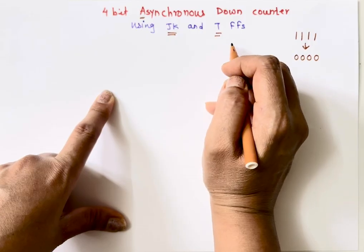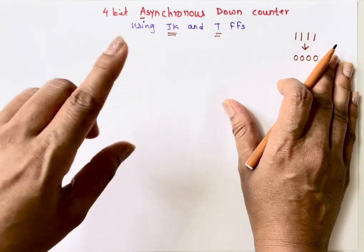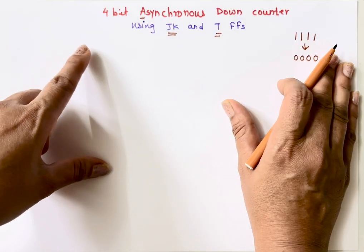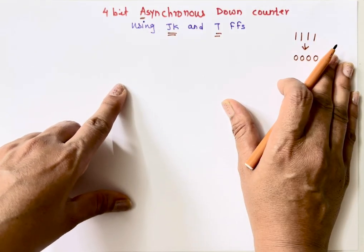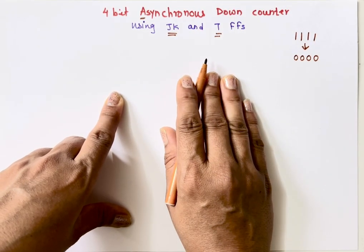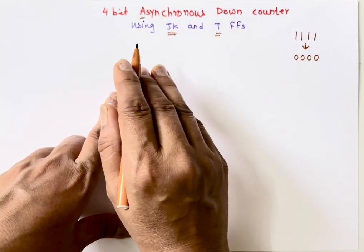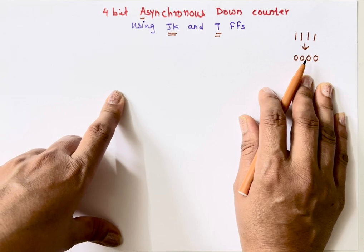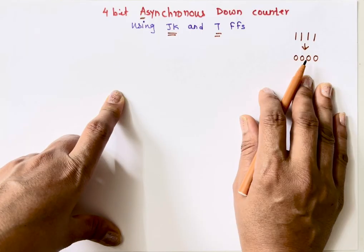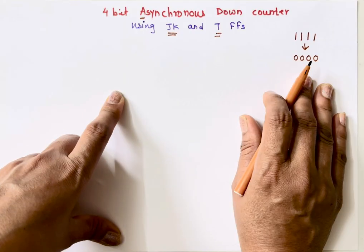The reason is that asynchronous counters work on the principle of toggling. In the case of a JK flip-flop, both J and K inputs are connected to logic 1. In the case of a T flip-flop, the T input is connected to logic 1. Whenever the input is connected to logic 1, the next state output is the complement of the present state. Because asynchronous counters work on toggling, we use JK and T flip-flops. I'll show you using both.